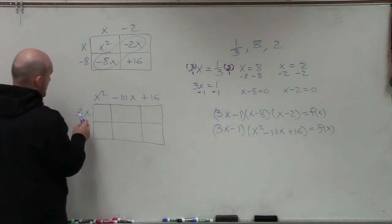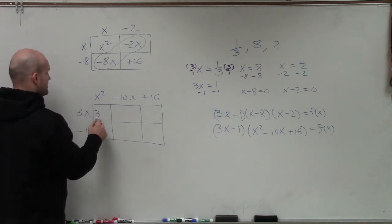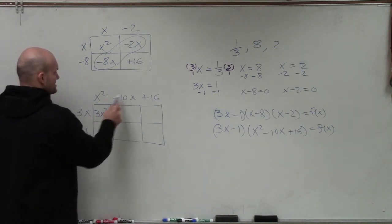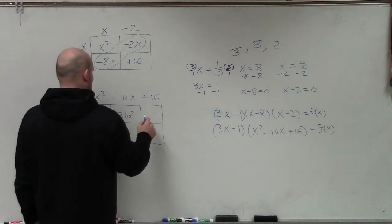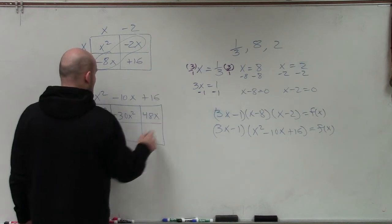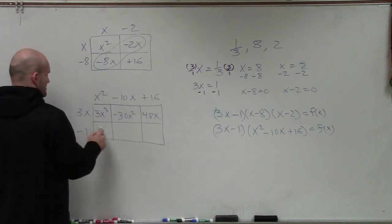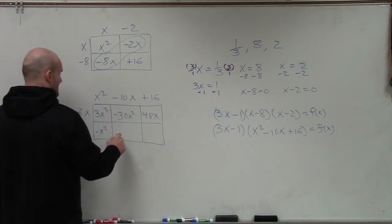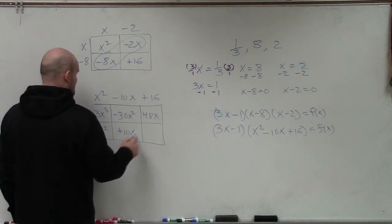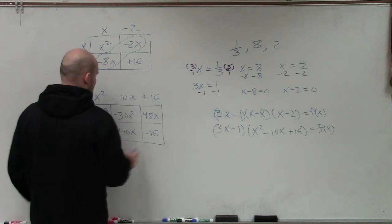So again, now I just go back and multiply. 3x times x squared is going to be 3x cubed. 3x times negative 10 is a negative 30x squared. 3x times 16 is going to be a 48x. x squared times negative 1 is a negative x squared. Negative 1 times negative 10 is a positive 10x. And negative 1 times 16 is going to be a negative 16.